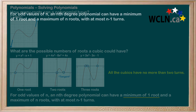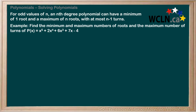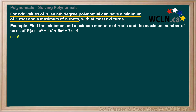Let's carry this conclusion to the next slide and see a quick example. Find the minimum and maximum numbers of roots and the maximum number of turns of p of x, which is x to the 5 plus 2x to the 4 plus 6x cubed plus 7x minus 4. Our first step is to determine the degree of p of x, which is the same as the highest exponent on the x variable, which is 5, an odd number. So as we apply our conclusion from the last slide, our n is 5. We know that for odd values of n, an nth degree polynomial can have a minimum of one root and a maximum of n roots.